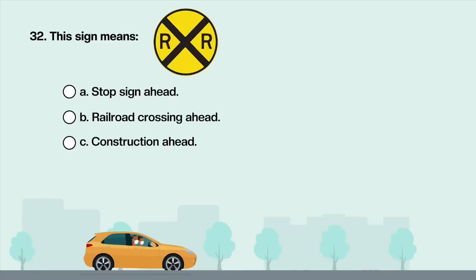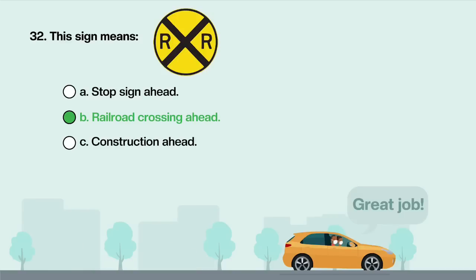This sign means: A. Stop sign ahead. B. Railroad crossing ahead. C. Construction ahead. Answer is B: Railroad crossing ahead.